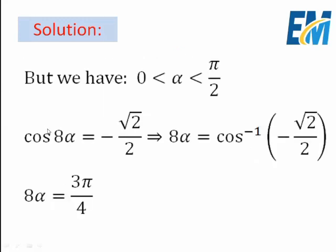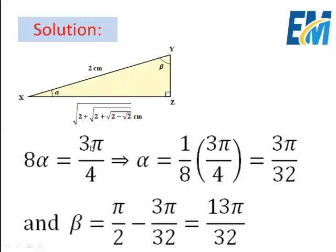Since cos(8α) = −√2 / 2, and alpha is between 0 and π/2 (an acute angle), we have 8α = arccos(−√2 / 2) = 3π/4 (which is 135°). Therefore 8α = 3π/4, and dividing both sides by 8 gives α = 3π/32.